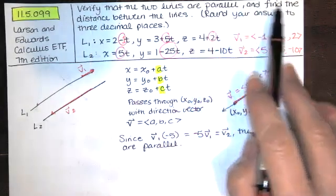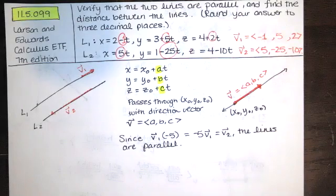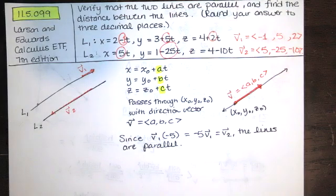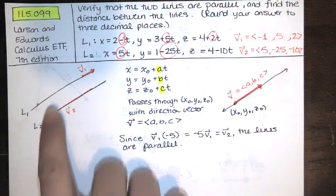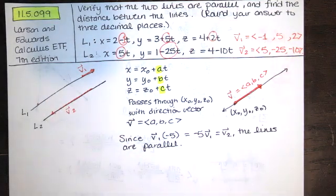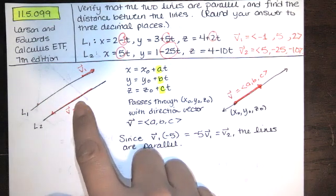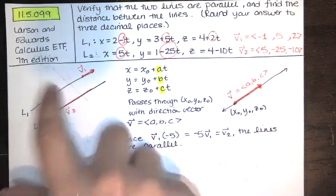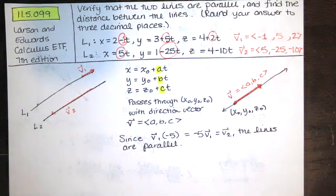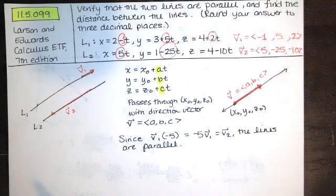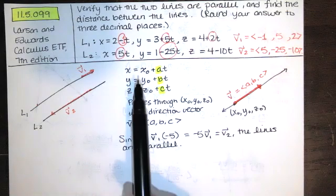We've verified the lines are parallel. Now we need to find the distance between them. We don't have a direct formula for the distance between two lines, but we can find the distance between a line and a point not on the line. So we just need to find a point on one line and then find the shortest distance from that point to the other line. The coordinates x₀, y₀, z₀ from the parametric equations give a point on the line.